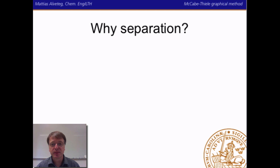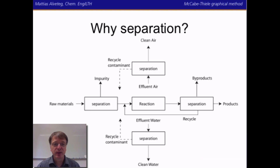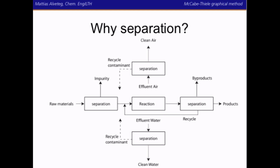So why do we study separation? Well, in any kind of production, you need separation to, for example, take away impurities in raw materials, take away byproducts in your final product. Perhaps you want to separate unreacted reactants so that you can recycle them into your reactor. There might be contaminants in the exhaust air or in the water that leave the system, and you might want to separate them, either to recycle the contaminants or to use them for some other purpose.